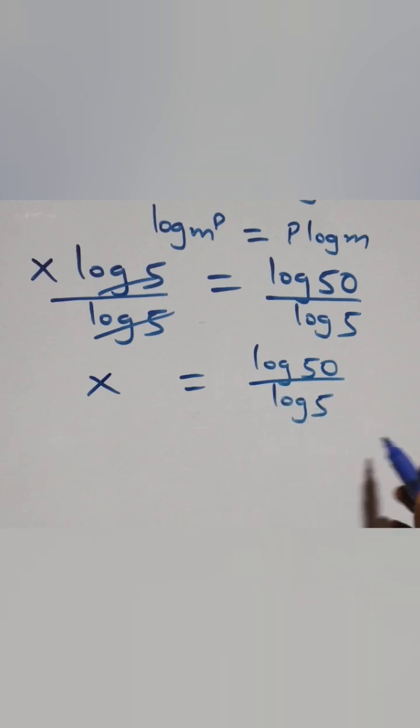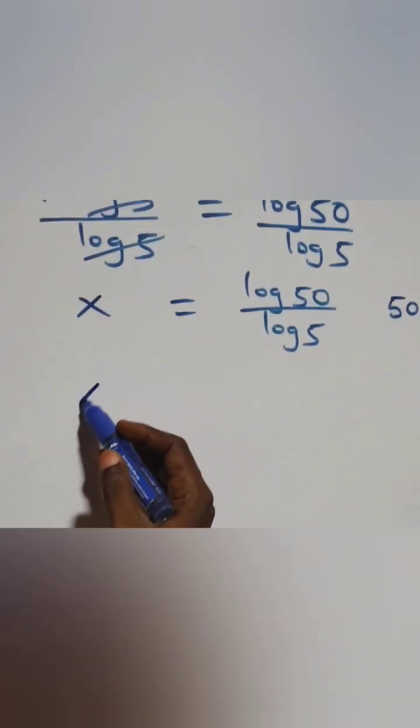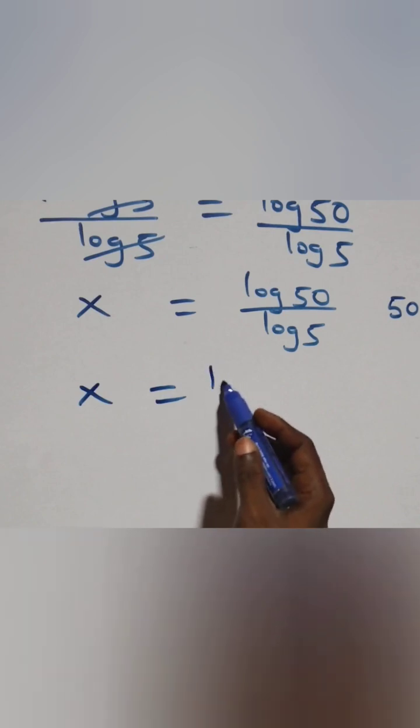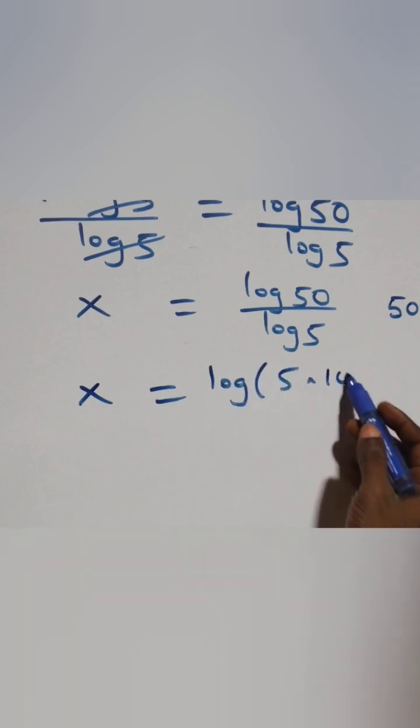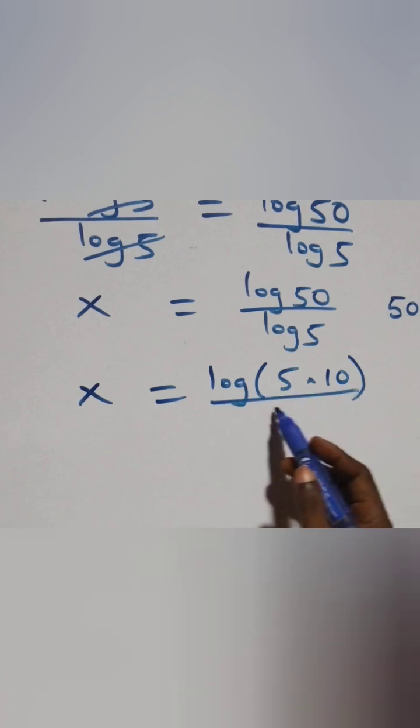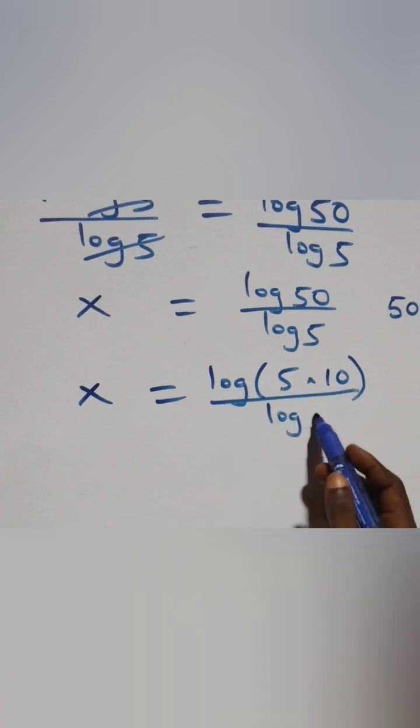The next step here, we can express 50 as 5 times 10. That is, this becomes x equals to log 5 times 10 over log 5.